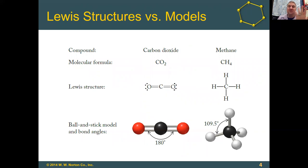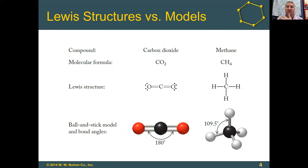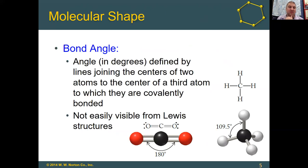As an example, we've got two compounds: carbon dioxide and methane. We can draw the molecular formula, which is one representation. Lewis structures are another representation that gives us more understanding of where atoms are and how they're connected. We also have ball-and-stick models, where the balls represent atoms — black is traditionally carbon, red is oxygen, white is hydrogen. In those models we can see the angles between atoms and bonds, which we call bond angles. The bond angle in degrees is defined by the lines joining the centers of two atoms to the center of a third atom to which they are covalently bonded.